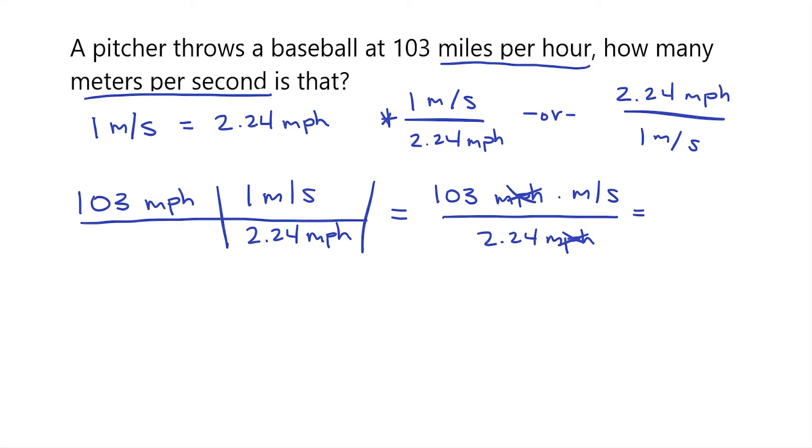So 103 divided by 2.24 comes out to be 45.9 meters per second. And that is how you convert from miles per hour to meters per second.